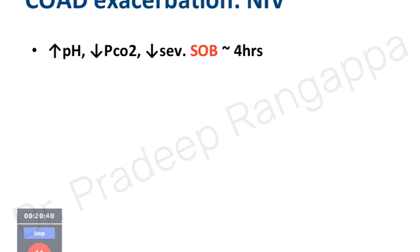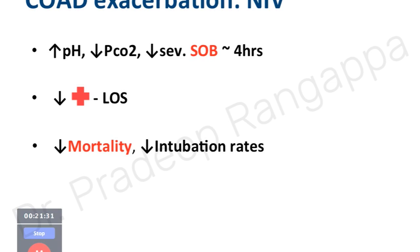For COPD exacerbation, when initiating NIV check if pH is improving — they have acidemia from high CO2. Monitor whether CO2 is falling and shortness of breath improving. Allow roughly 4 to 6 hours to see whether indices improve. If a patient presents with pH 7.1 and CO2 of 80, initiate NIV and monitor work of breathing, sensorium, and CO2. Monitor blood gases. NIV in COPD exacerbation reduces hospital length of stay, reduces mortality, reduces intubation rates, and has an 80–85% success rate.